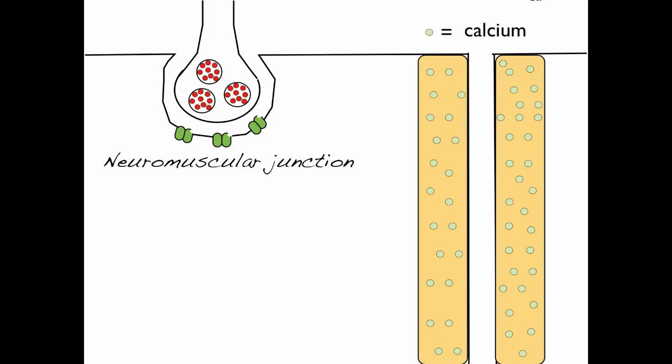So to orient you to my diagram, here we have the presynaptic neuron and its axon terminal containing vesicles of the neurotransmitter acetylcholine. The space between the presynaptic neuron and the skeletal muscle tissue is called the synaptic cleft. So here we have the plasma membrane of our muscle fiber.